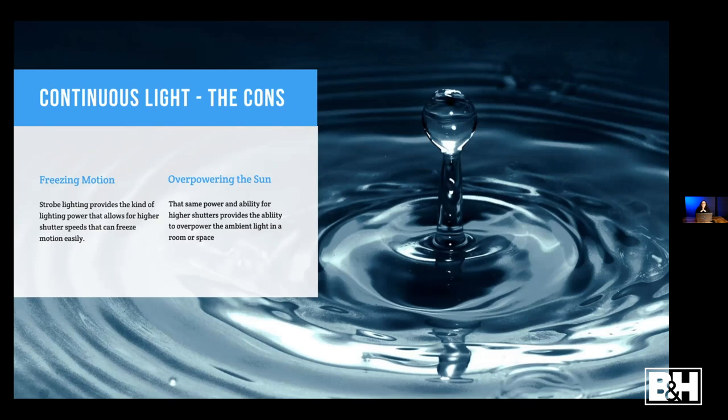In terms of a mindset shift from strobe to continuous light: the first thing most filmmakers do when they go into a space is make everything dark — close the shades, shut everything else off — and then put on continuous lights and shape that light. If you're looking to overpower the sun, you can to a degree, but not to the degree you could with strobes. I want to be very straightforward about that.